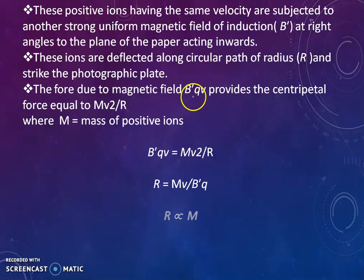We represent the centripetal force as MV squared upon R, where mass M is mass of positive ions. Now we can also write the magnetic field produces the centripetal force, so BQV is equal to MV squared divided by R. So R is equal to MV upon B dash Q. Here V and V get cancelled, so one V is remaining, so MV upon B dash Q.